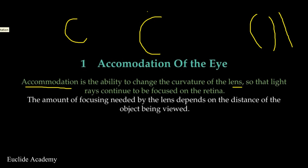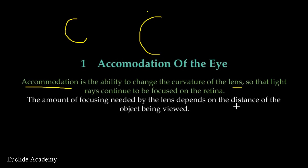When discussing the human eye, we did talk about the use of the lens. The human eye has a lens which is used to focus light. That lens is used to focus light rays onto the retina — if you remember the structure of the eye we discussed. Now, the shape of the lens does not remain constant — it does change. The amount of focusing needed by the lens depends on the object you are looking at and the distance of the object being viewed.